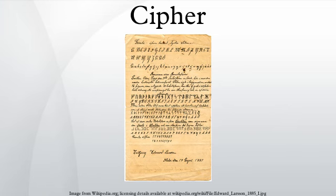Simple ciphers were replaced by polyalphabetic substitution ciphers which change the substitution alphabet for every letter. For example, 'Good Dog' can be encrypted as PLXXTWE, where L, S, and W substitute for O. With even a small amount of known or estimated plaintext, simple polyalphabetic substitution ciphers and letter transposition ciphers designed for pen and paper encryption are easy to crack. It is possible to create a secure pen and paper cipher based on a one-time pad, though the usual disadvantages of one-time pads apply.